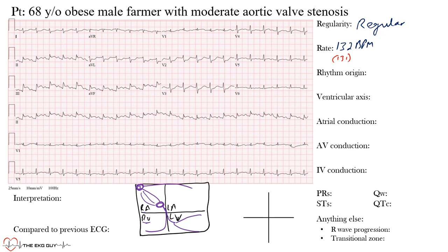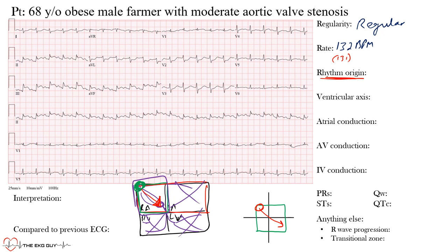The left bundle branch subdivides into anterior and posterior fascicles, and from there ventricular Purkinje fibers spread the impulse from cell to cell. When asking if sinus rhythm is present, we're focusing on the atria. The normal P wave axis in sinus rhythm is between 0 degrees and positive 75 degrees, with the impulse from the sinus node heading in that direction.